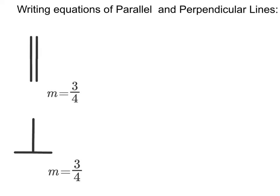Let's first get used to some notation. These two lines right here, the two vertical lines next to each other, mean parallel. And these lines, this upside down t, means perpendicular. So what's true about parallel lines?